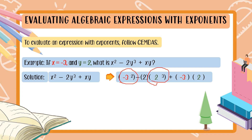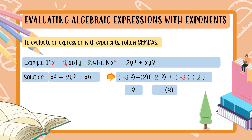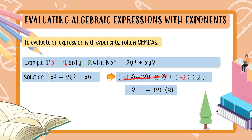Negative 3 squared gives us positive 9. 2 cubed, which is 2 times 2 times 2, gives us positive 8. Bring down the minus 2 that was not part of the exponent. We are done with exponents. Now we proceed to multiplication: negative 3 times 2 gives us negative 6. Bring down plus then negative 6.